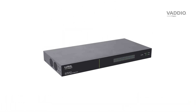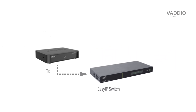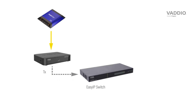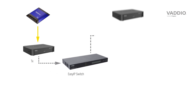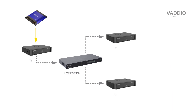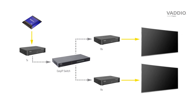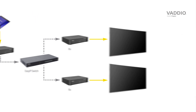You can also build out entirely new content distribution systems. Start by setting a TXRX unit to transmit and input your media source. Next, set any number of TXRX units to receive and select the source you would like them to receive from the web interface. Connect the receiving units to a display or projector and you're ready to go.